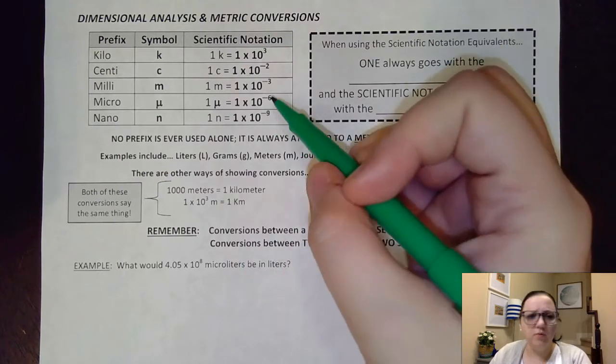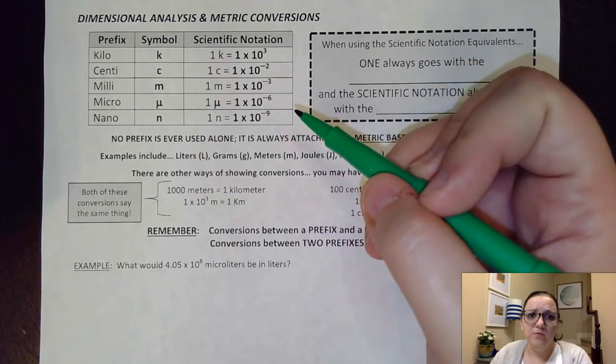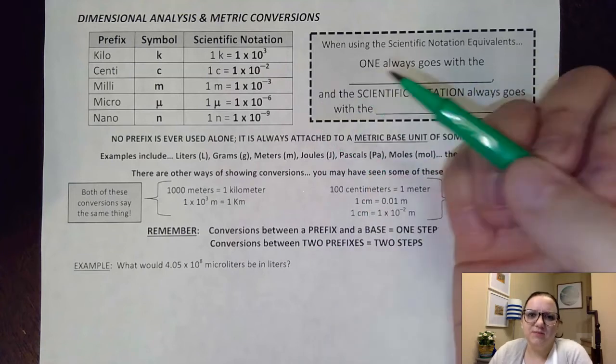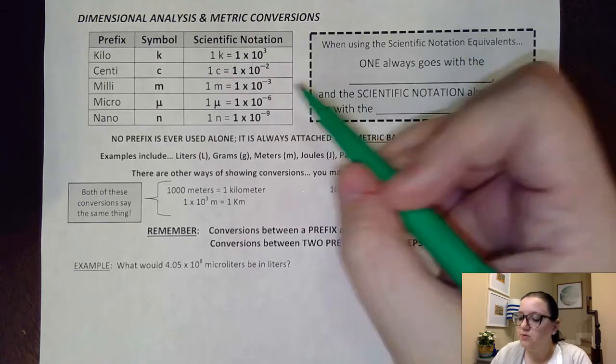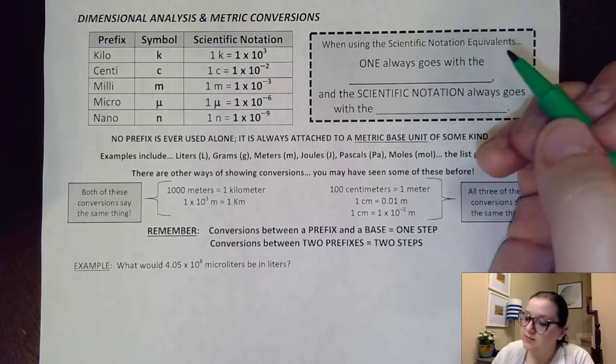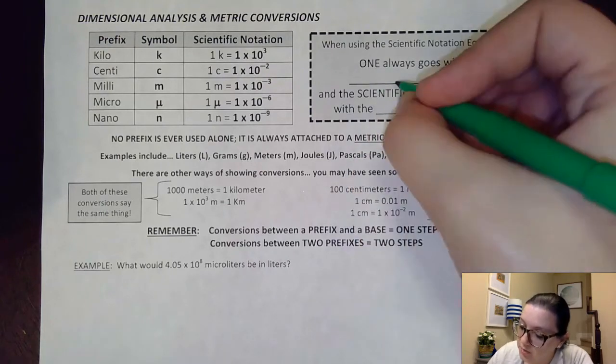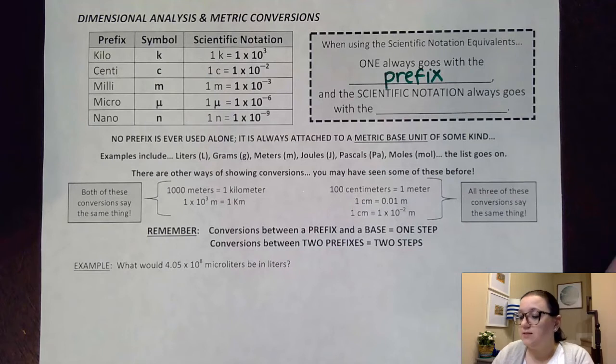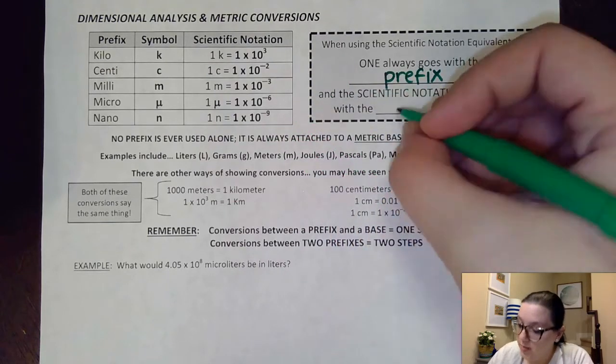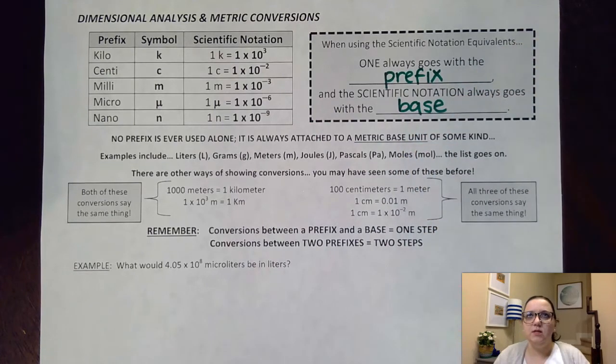Especially when it comes to these really small ones like micro and nano, I don't want to be moving over the decimal nine times. Sometimes I need to show my work on what I'm doing in my conversions. So when I'm using these scientific notation equivalents, the one number always goes with the metric prefix when you're setting up your dimensional analysis conversion, whereas the scientific notation equivalent goes with the base unit. What I mean by the base unit is whatever you would attach your prefix to, like grams or joules or moles.